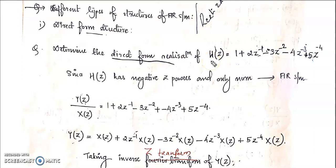First of all, we want to check whether the transfer function is an FIR filter or an IIR filter. In the next two chapters we will discuss about the IIR filter. Here in this H(Z), it has only negative Z powers and only numerator terms, so this represents an FIR system.